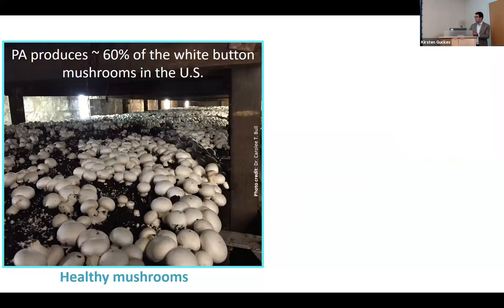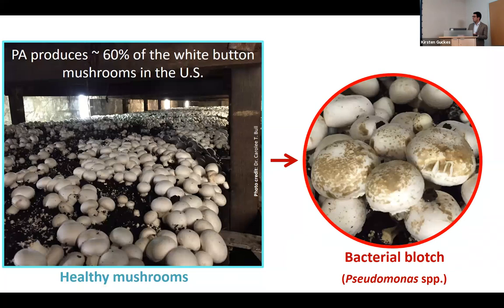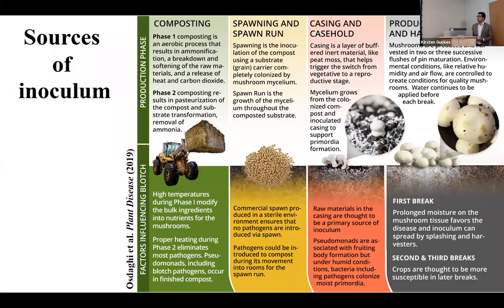This is how mushrooms should look — healthy and pretty. However, we have the main disease of mushrooms: bacterial blotch, which is caused by a complex of Pseudomonas. The pathogen can come from different sources of inoculum. For example, it can come from the compost. This is a survey paper we published last month — you can take a look for more detail if interested.